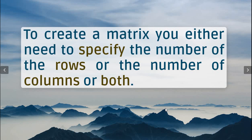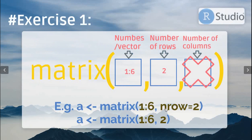To create a matrix, you need to specify the number of rows, the number of columns, or both. In this example we set nrow to 2 and use values 1 to 6 — so we have six numbers. R will divide them into two rows and automatically set the column number to three, because the number of inputs must equal the number of matrix elements.